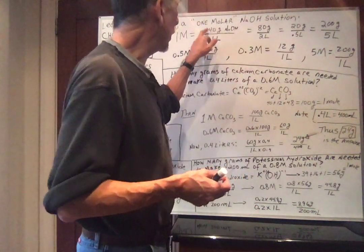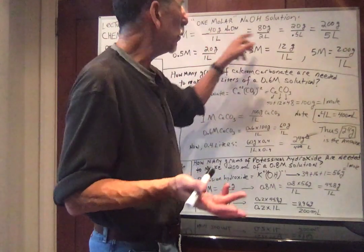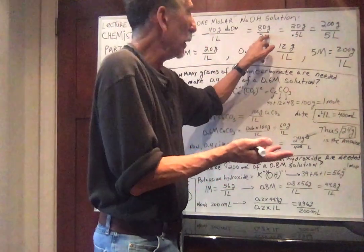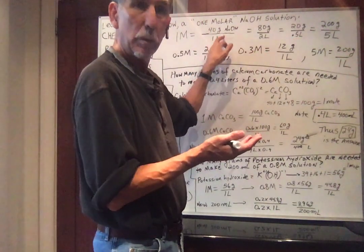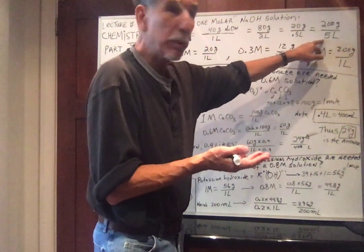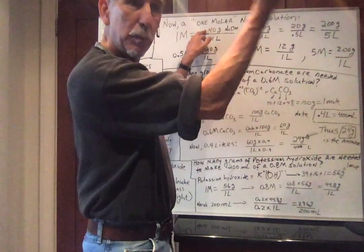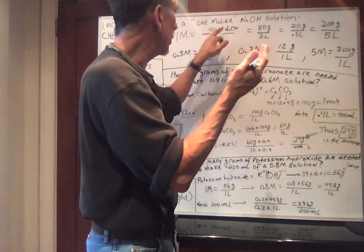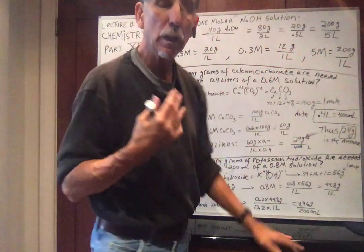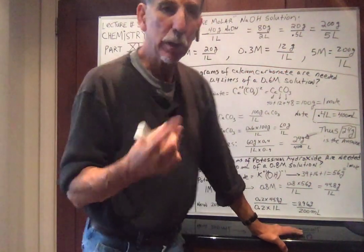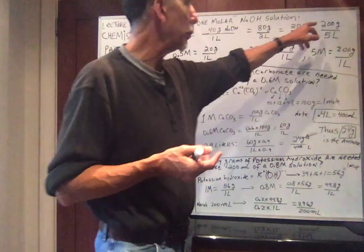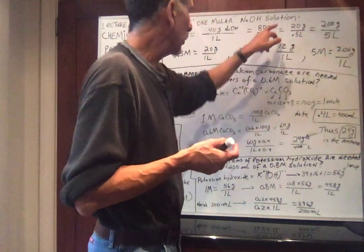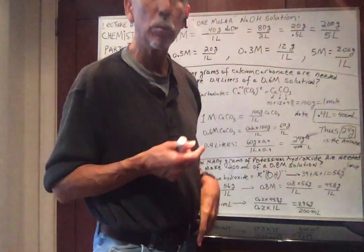Same idea. If there's 40 grams in one liter, that would be the same as 80 grams in two liters, or 20 grams in half a liter, just divide in half, or 200 grams in five liters. If I multiply 40 times five, I get 200 grams in five liters. That would be the same concentration, a 1M, one molar concentration. They're all equivalent to one mole in one liter.